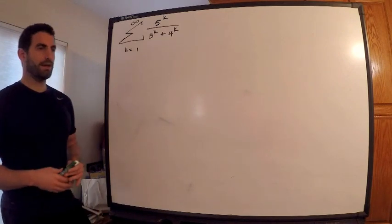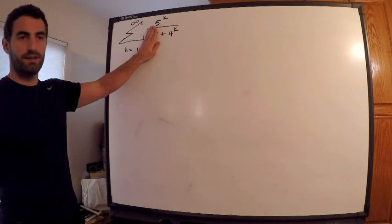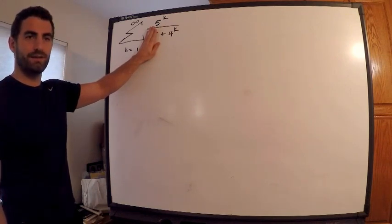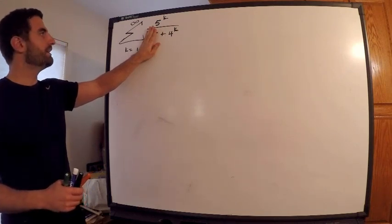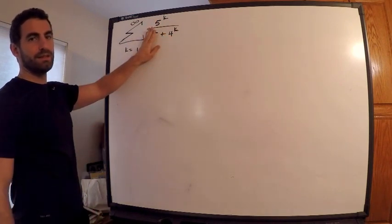I want to point something out in my thought process here. If I just ignore the 3^k, this is 5^k over 4^k. You should recognize that if I ignore the 3, that's 5^k over 4^k—it's (5/4)^k. That's geometric with common ratio 5/4.